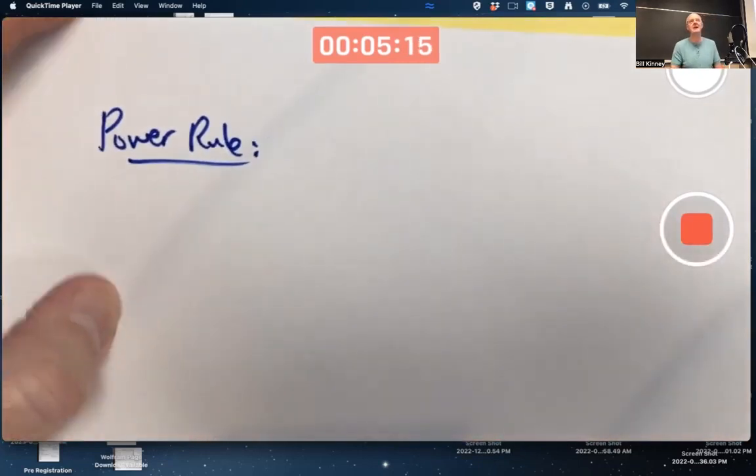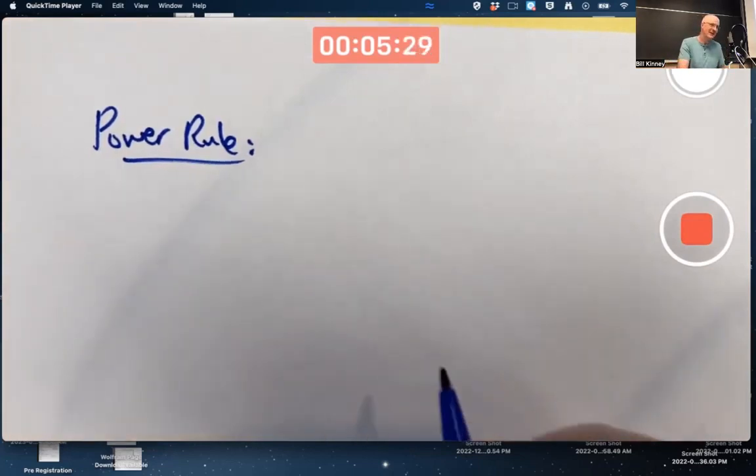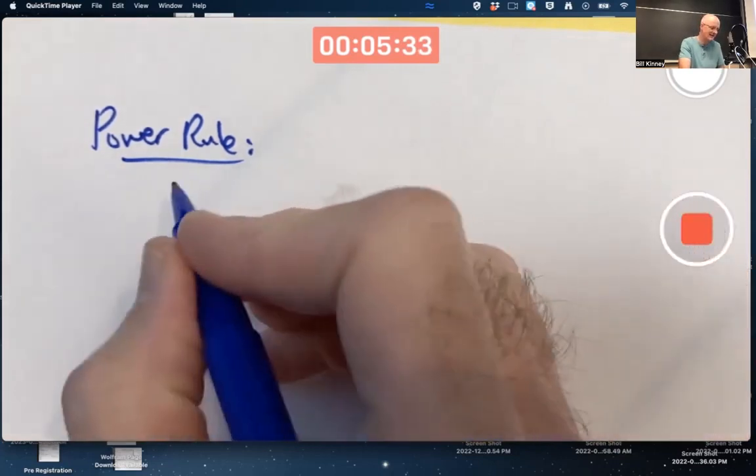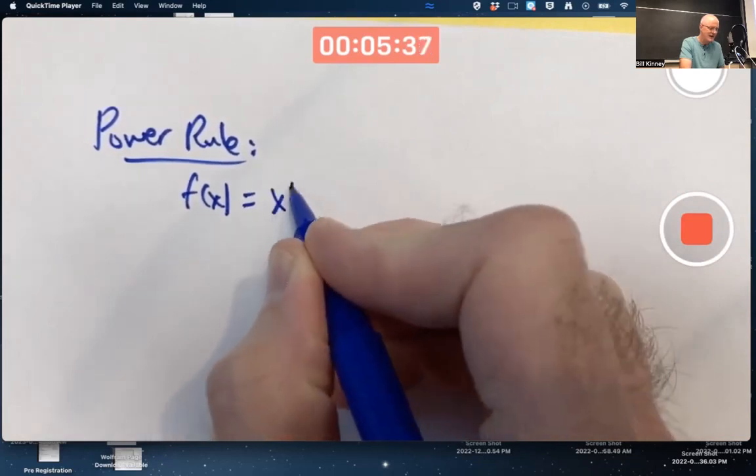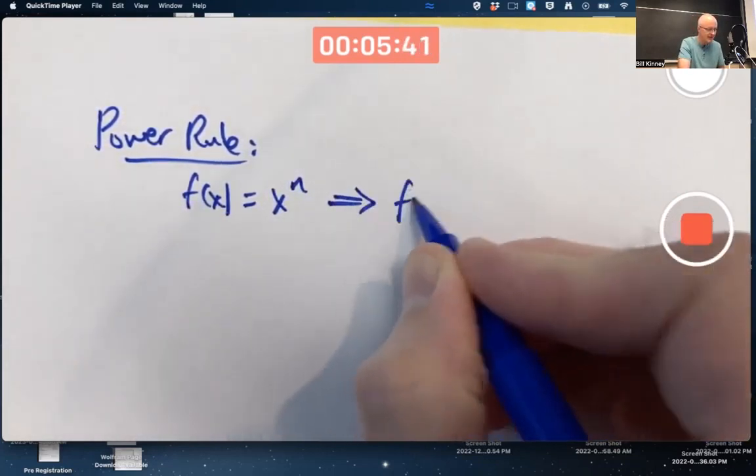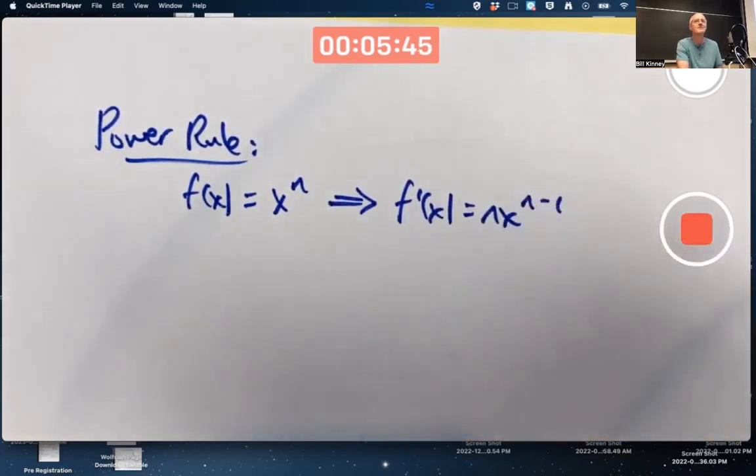The power rule tends to be the thing in calculus that people remember until their dying day. That's the one thing you might remember from calculus class. You can write it symbolically in a few different ways. I showed you these ways last time.